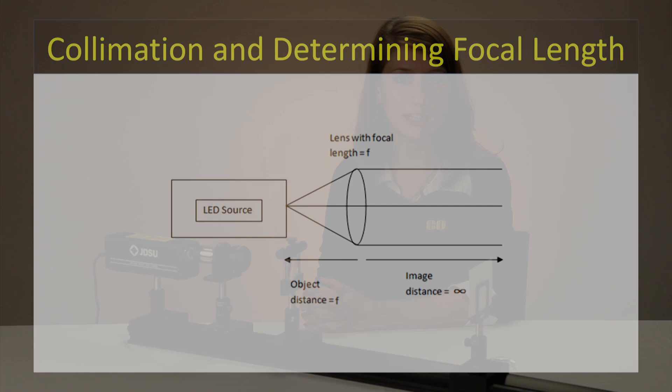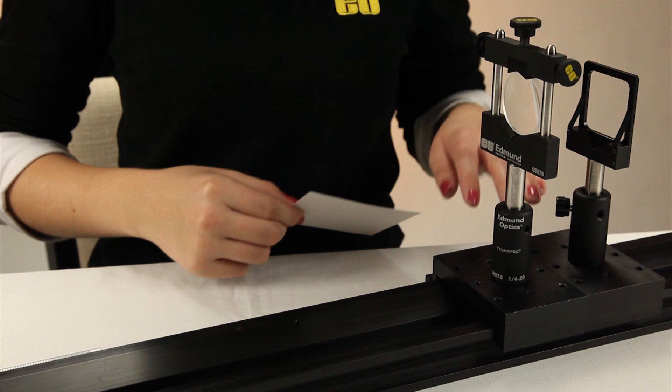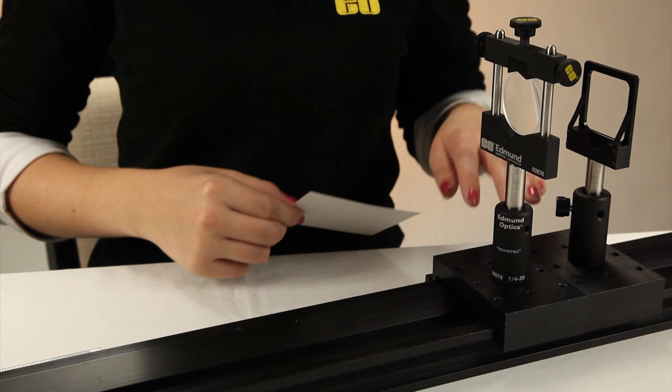To collimate a diverging light source with a lens, you can place the lens a distance away from the source equal to the focal length of the lens. Here, we have a diverging beam of light and a positive lens at a distance equal to the focal length away. As you can see, the light spot stays about the same size at any distance away from the lens.